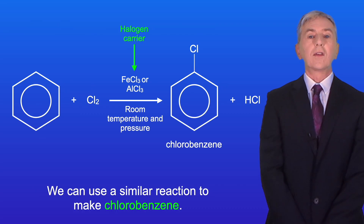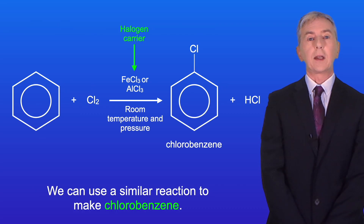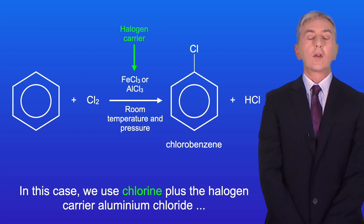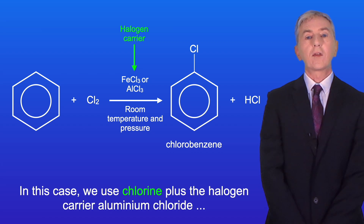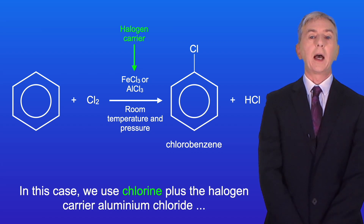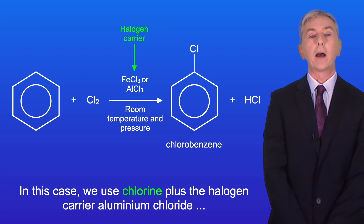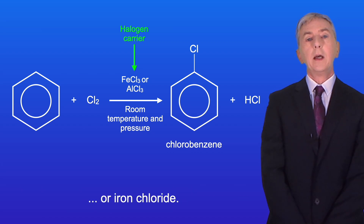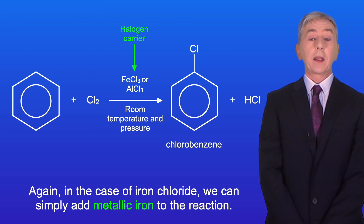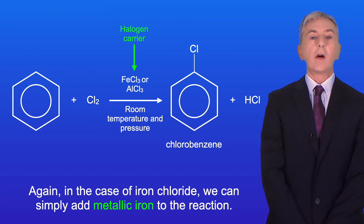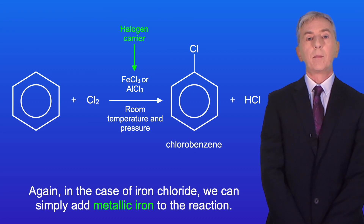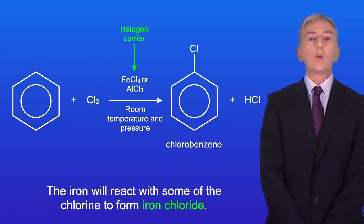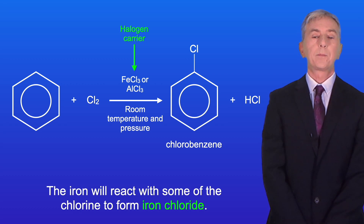A similar reaction can be used to make chlorobenzene. In this case we use chlorine plus the halogen carrier aluminium chloride or iron chloride. Again, in the case of iron chloride, we can simply add metallic iron to the reaction; the iron will react with some of the chlorine to form iron chloride.